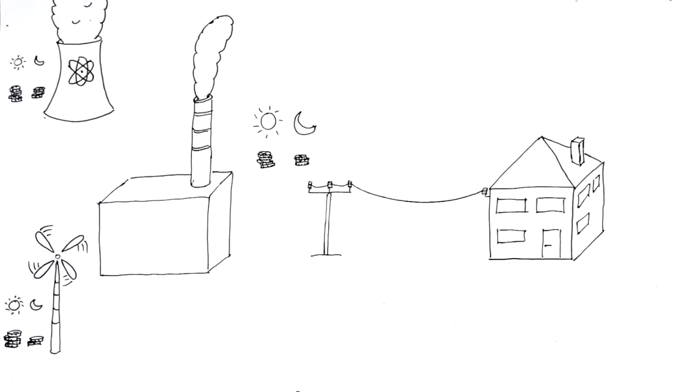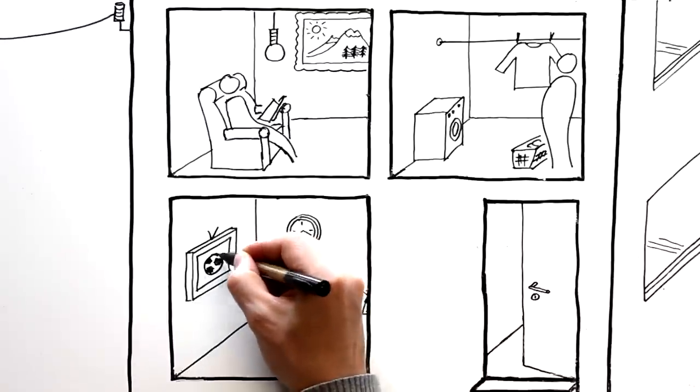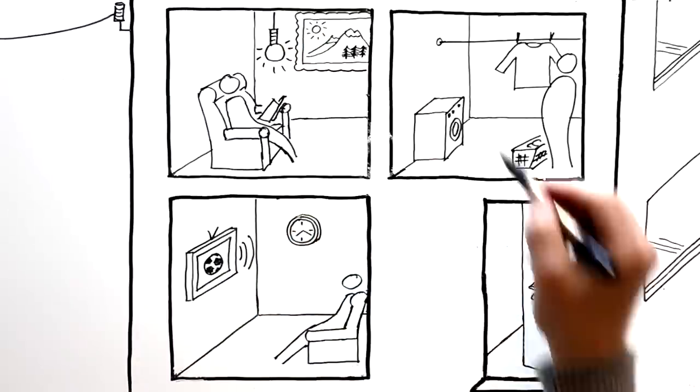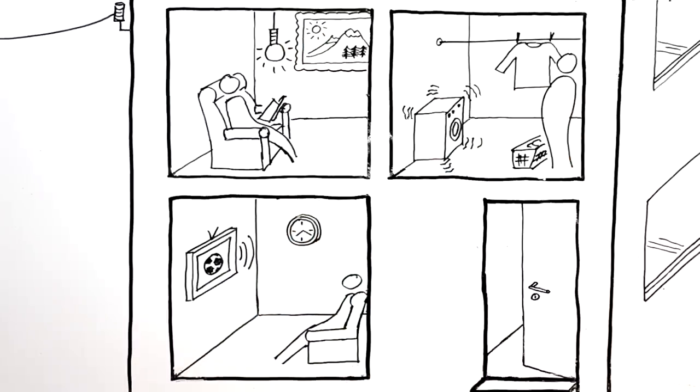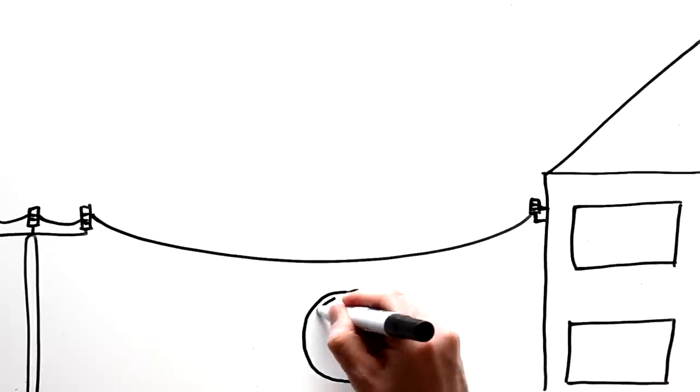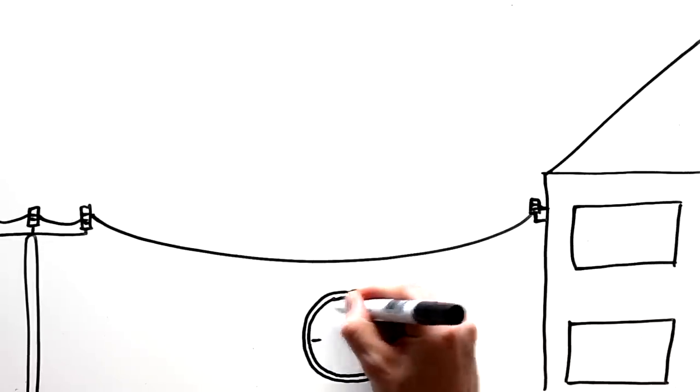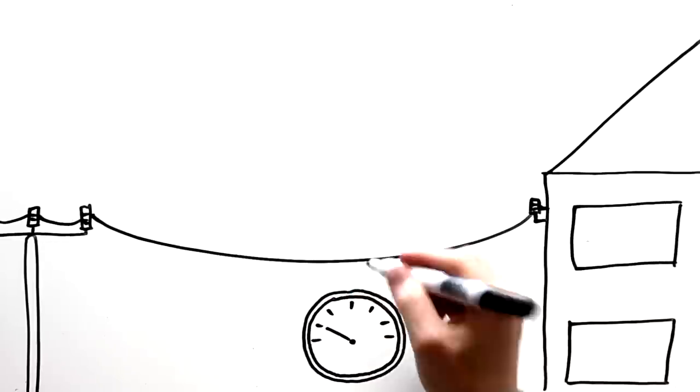That company sends electricity to your home and charges you whenever it's used. To know how much to charge, the power company installs a meter in your home that measures how much electricity you're using.